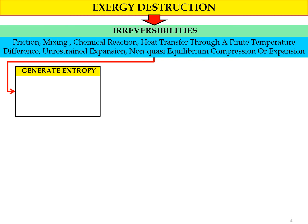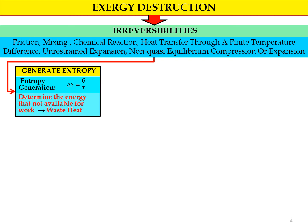When there are losses in the system, it will generate entropy. Entropy generation can be calculated using the equation: delta S equals Q divided by T. This entropy generation determines the energy which is not available for work — essentially waste energy.